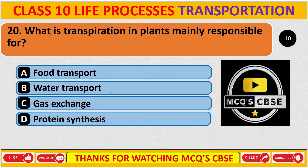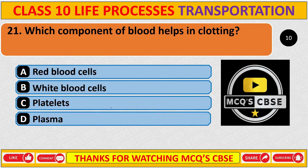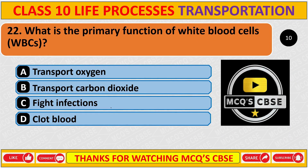What is transpiration in plants mainly responsible for? The correct answer is B: water transport. Which component of blood helps in clotting? The correct answer is C: platelets. What is the primary function of white blood cells (WBCs)? The correct answer is C: fight infection.